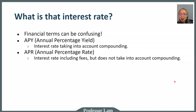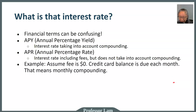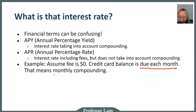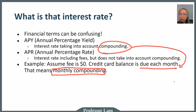Let's take a look at a simple example. We'll ignore fees for the time being because they can complicate calculations. You have a credit card and the balance is due each month. The fact that payment is due each month translates into monthly compounding. So compounding really means how often you make a payment. If you make payment once a month, you have monthly compounding. If you make payment every other week, you have bi-weekly compounding, and so forth.